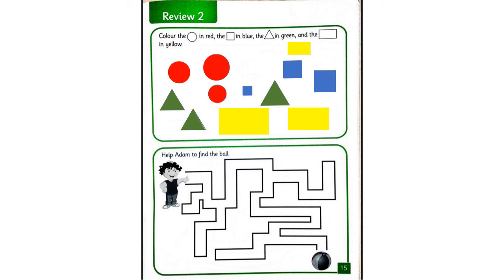Okay, KG1. Can you see this boy? His name is Adam. Can you help Adam to find his ball, please? Okay, let's help him. Great. Amazing. Very nice. He's about to find his ball. Wow. Good job, KG1.